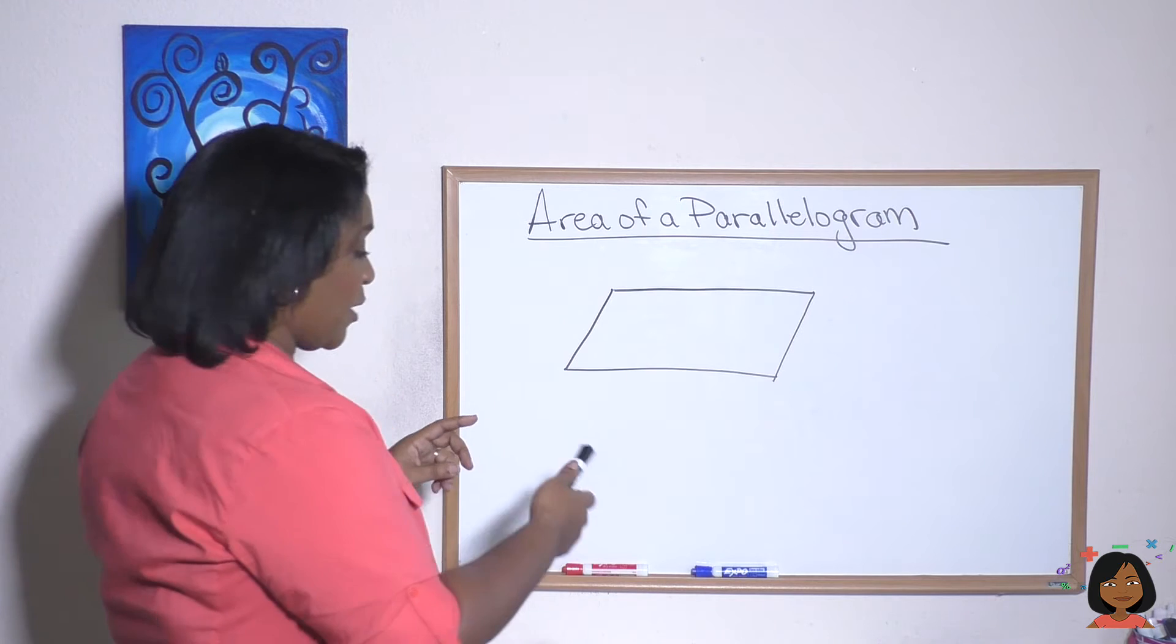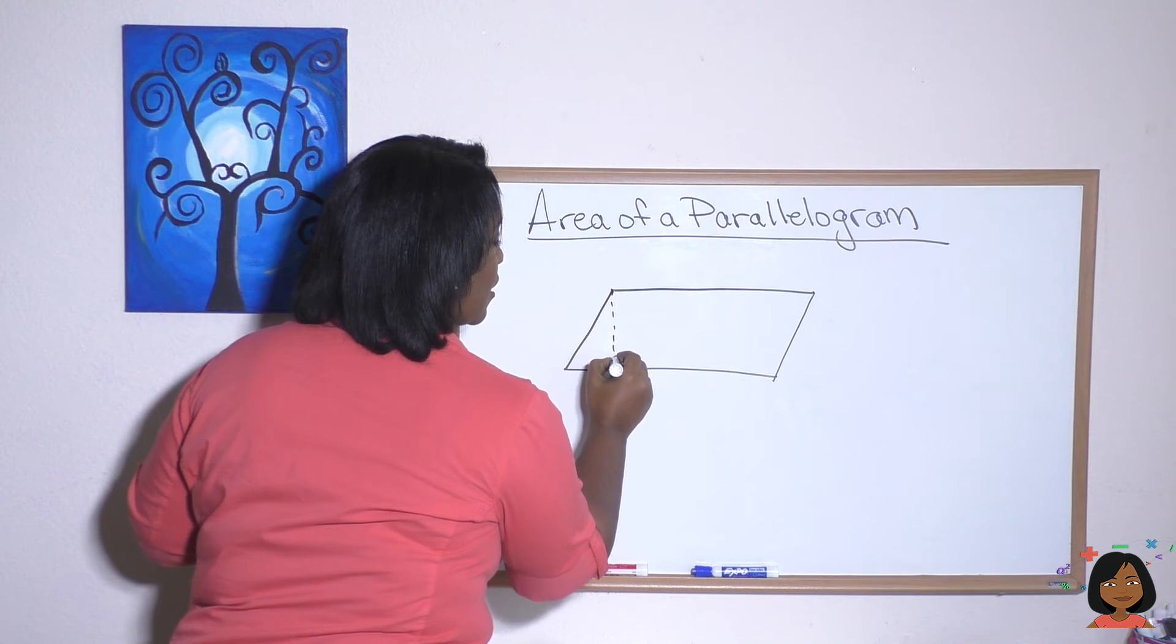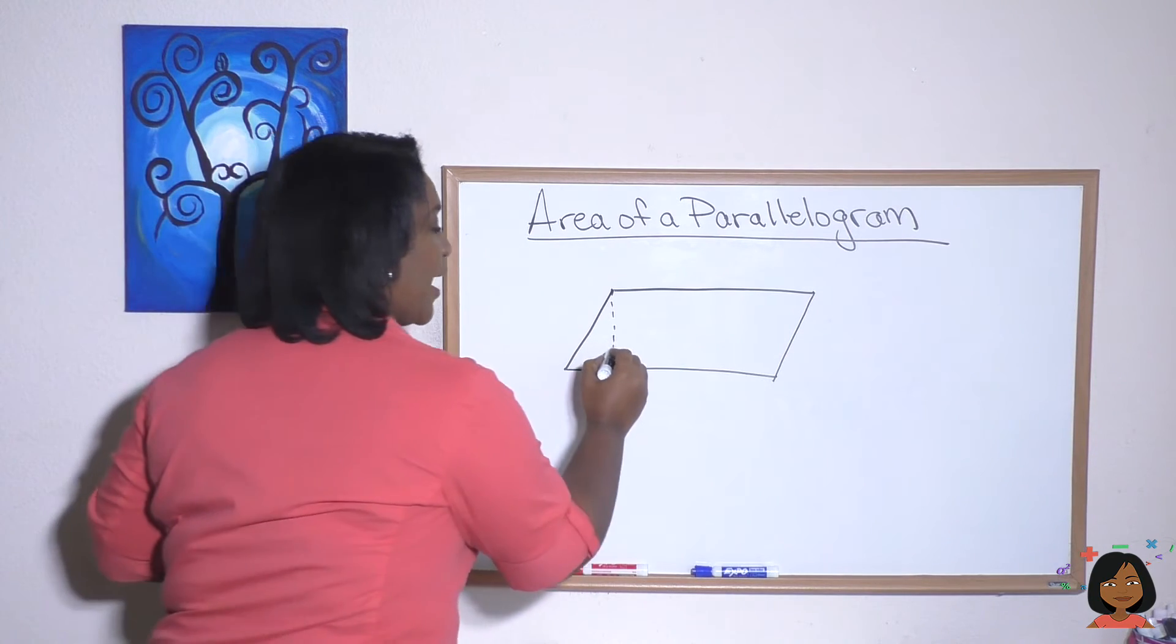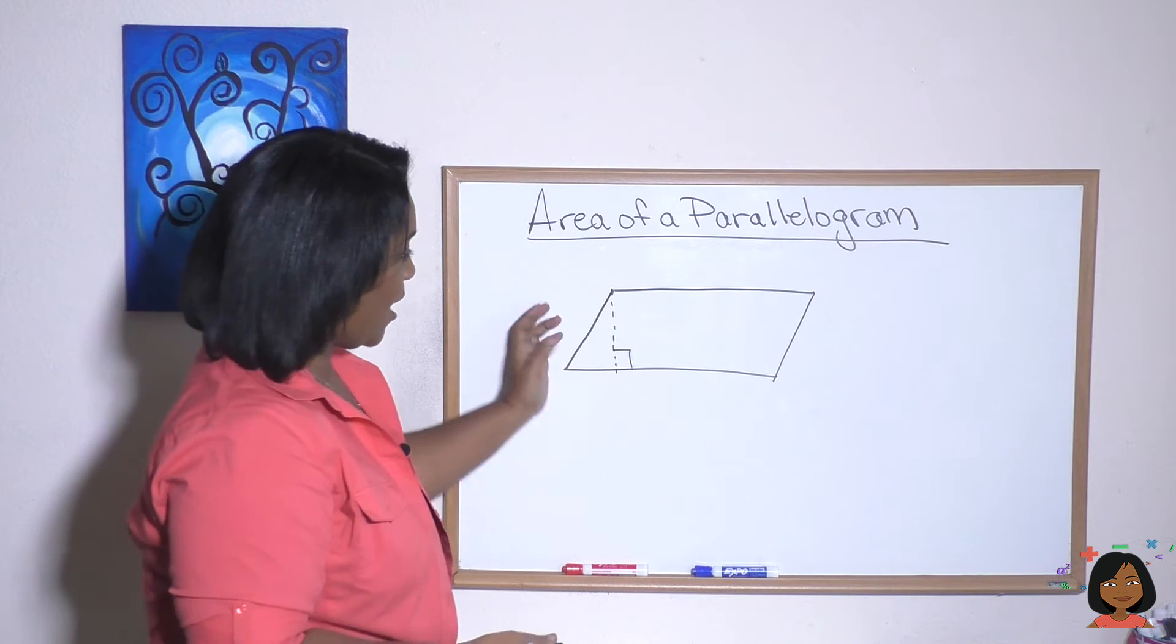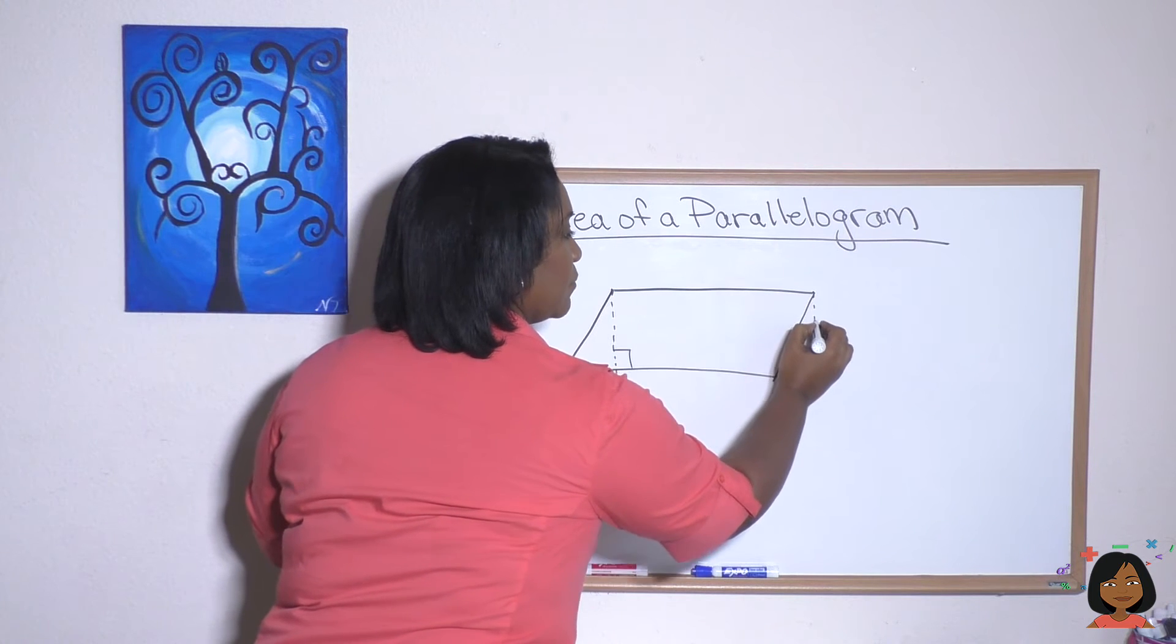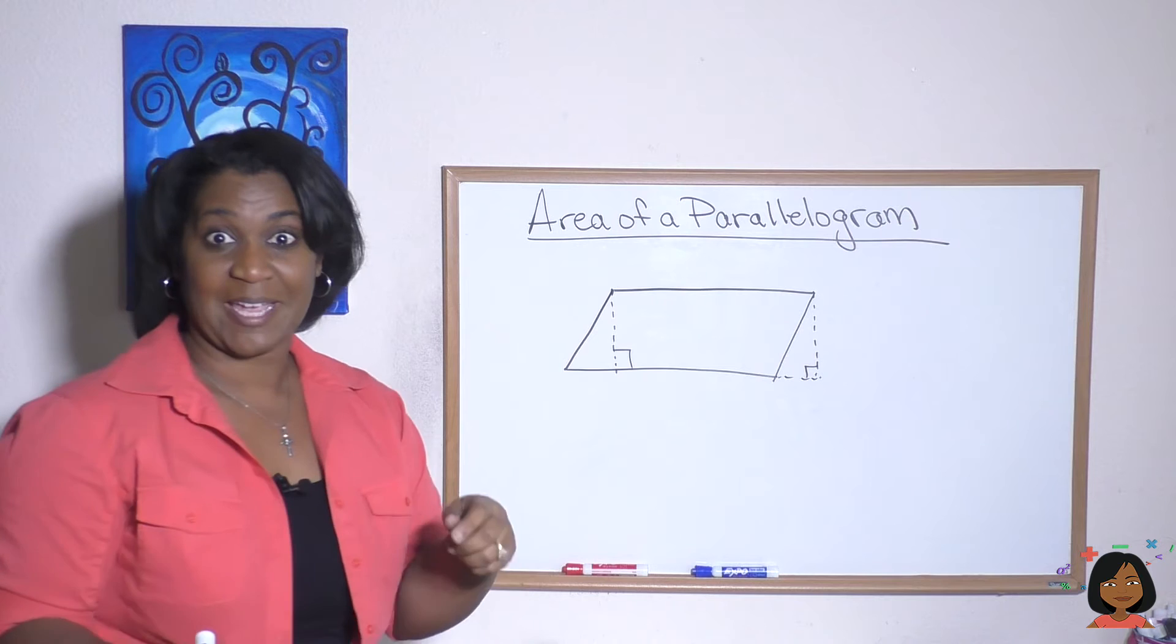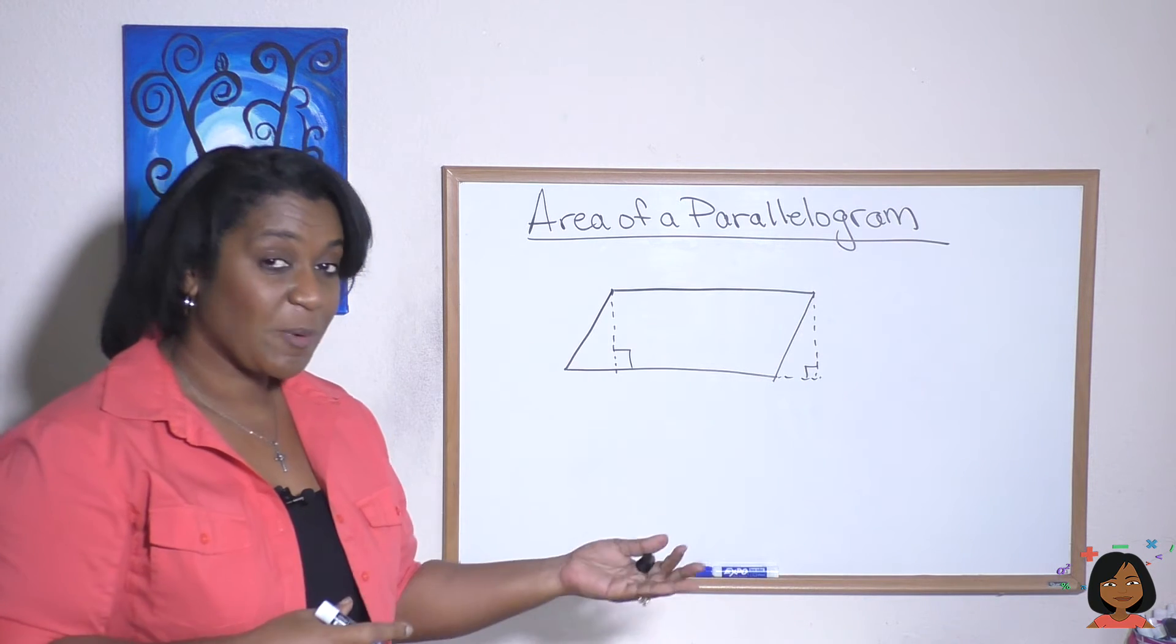So if we decided to take a scissors and cut off this little triangle to make a 90 degree angle here, do you realize that we could take that triangle and flip it and slide it over and put it right here? And it would give us a rectangle.